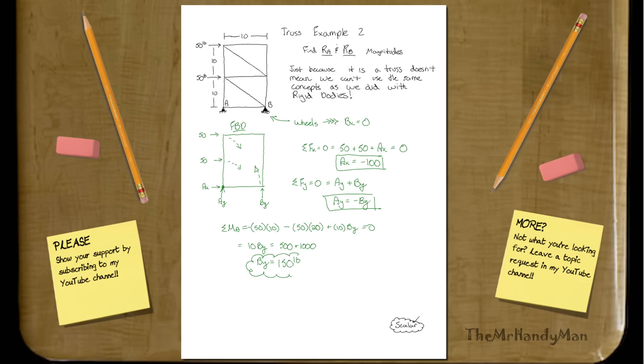So now we're getting there. We know that using this function right up here that we got from just looking at the Y components, we can see that it's just opposite. So A_Y is going to equal negative 150 pounds. And that's just because of the function right above.